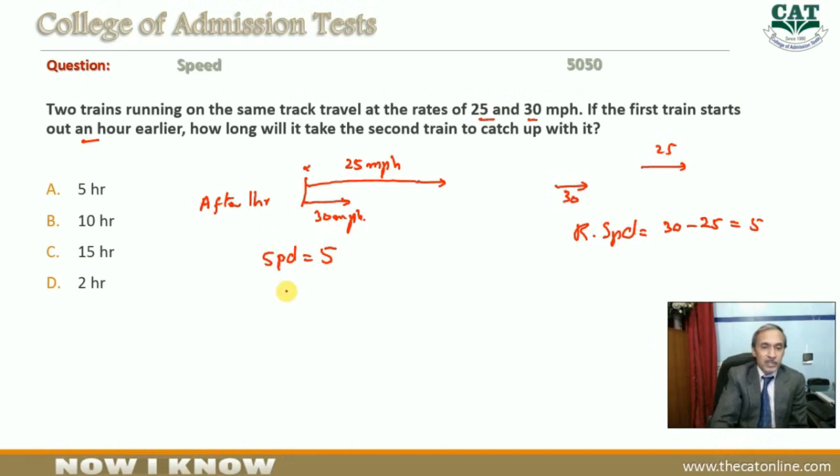Now we need a distance so we can find the time. The distance is one hour before, so one hour at 25 miles per hour means the distance traveled is 25 miles. The other train is actually 25 miles behind it and has 25 miles to cover.